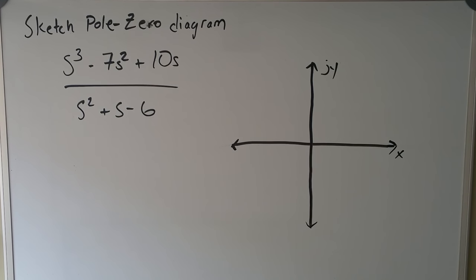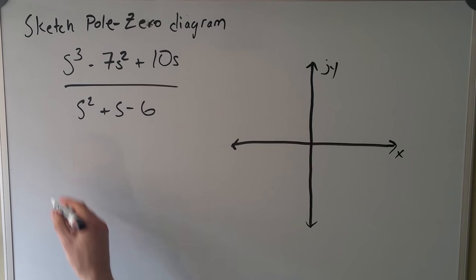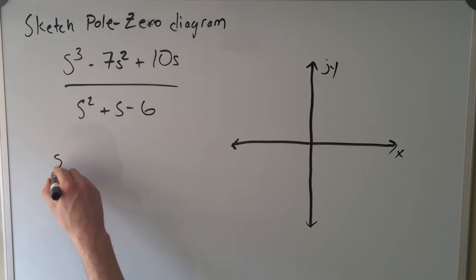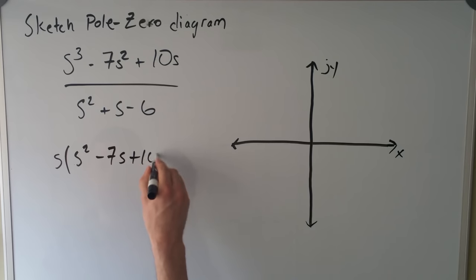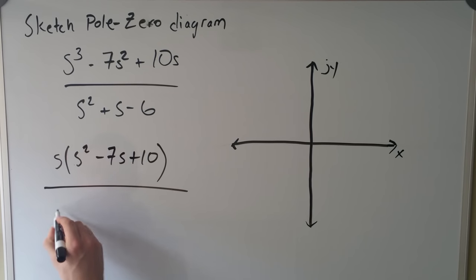Alright, we're going to start out today sketching the pole-zero diagram given the s function. So we start by taking out the s on the top so we can start factoring. We take s out and that breaks down to s squared minus 7s plus 10 over s squared plus s minus 6.